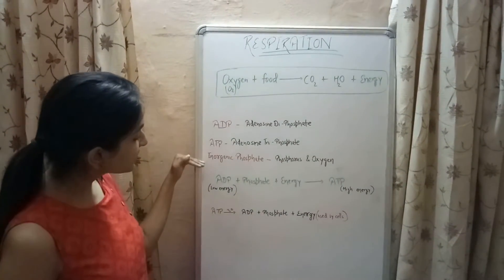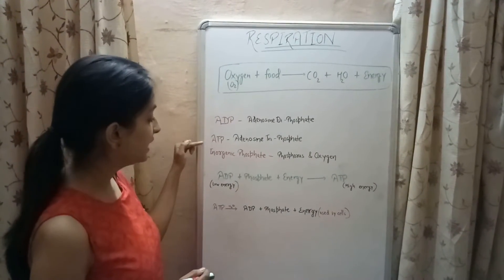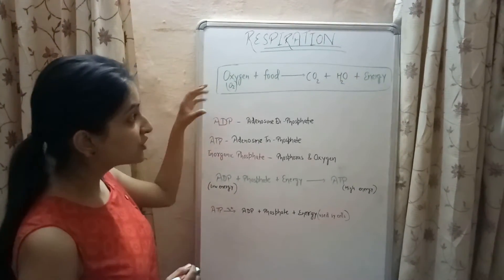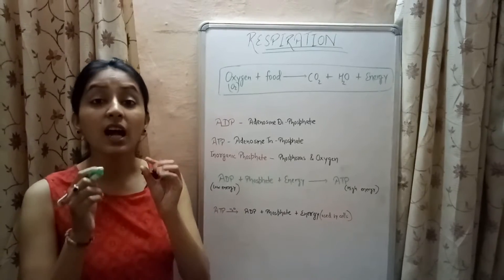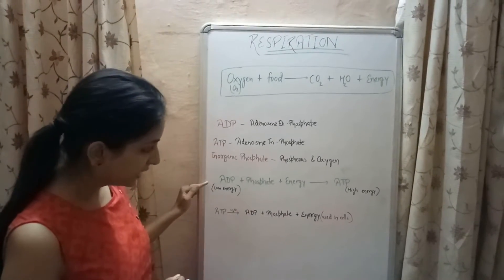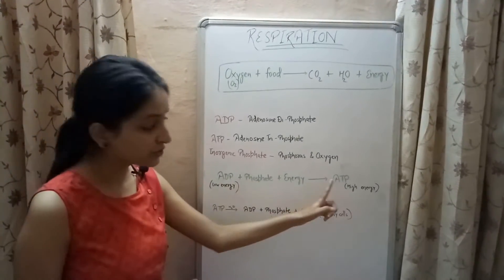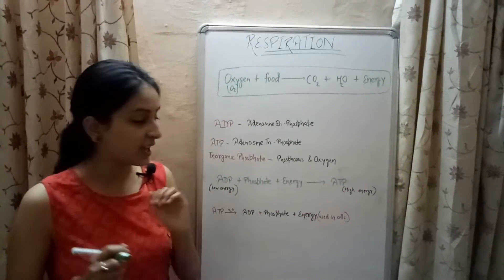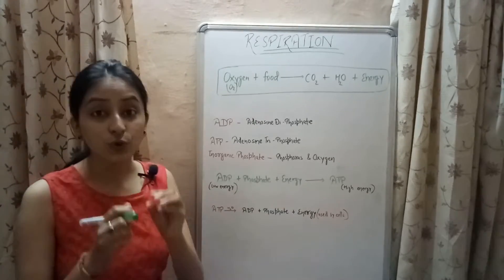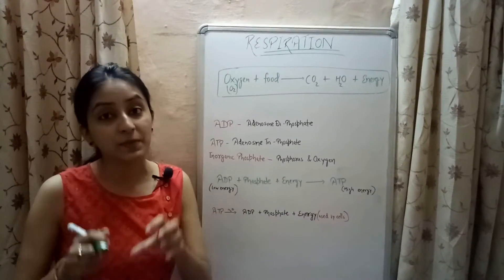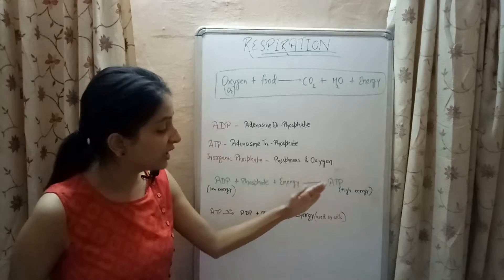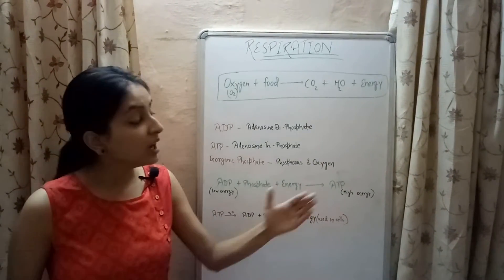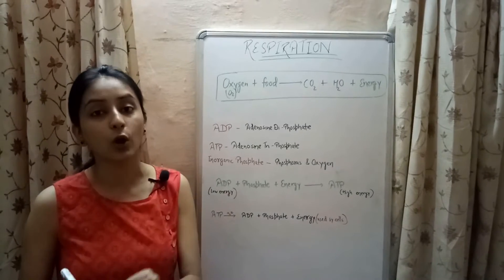All three substances — ADP, ATP, and inorganic phosphate — are present in the cells of our body. When energy is released by respiration, this energy combines with ADP and inorganic phosphate to produce ATP. ATP has a high energy content whereas ADP has a low energy content. So the energy released by respiration is stored in the form of ATP in our body cells.